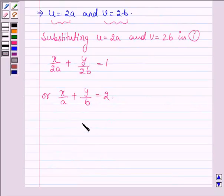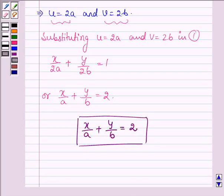Therefore, equation of the line is X upon A plus Y upon B equals 2, whose midpoint is P(A,B) and is between the axes. This completes the solution. Hope you have understood it. Take care and have a good day.